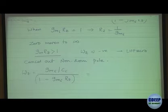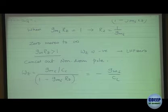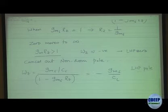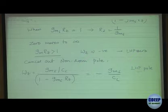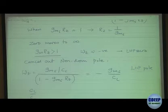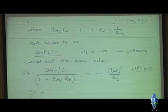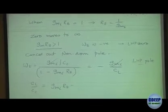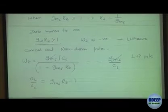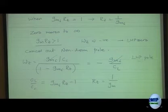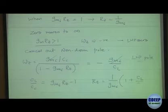The minus sign is because it is in the left-half-plane. Grinding through the math: CL/CC = GM6*Rz minus 1. Solving for Rz: Rz = (1/GM6) * (1 + CL/CC).